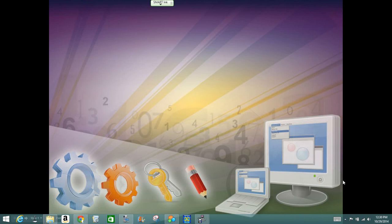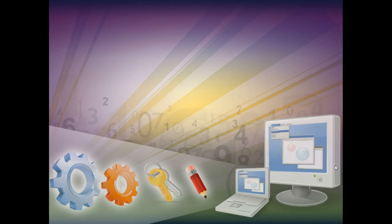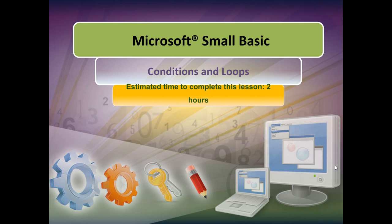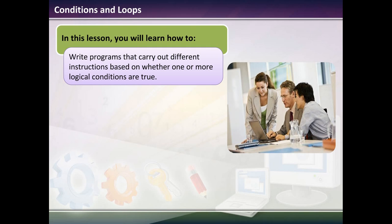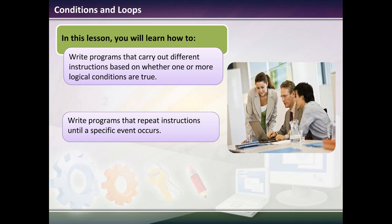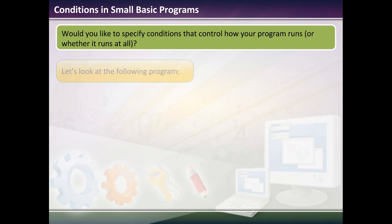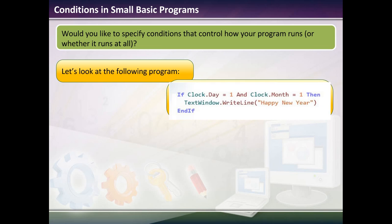So for lesson 1.4, we're going to talk about conditions and loops. In this lesson, we'll write programs that carry out different instructions based on one or more logical conditions that are true. We'll also write programs that repeat instructions until a specific event occurs. The question we're answering is: would you like to specify conditions that control how your program runs or whether it runs at all? Let's look at the following program.